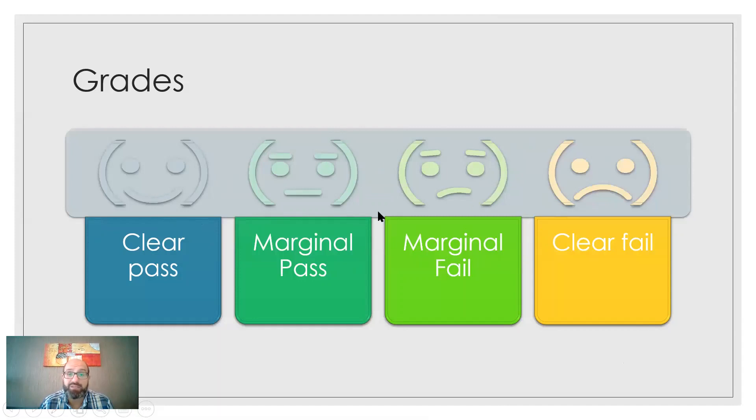If you put an odd number of grades, and the candidate is not performing very well and the assessor is not sure whether he is passing or failing, they will probably put him in the middle. It's a tendency to the mean, but you need them to really make a decision—is he a passing candidate under these two grades or a failing candidate?